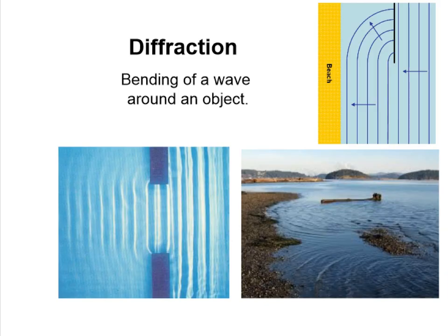When a wave strikes an object, several things can happen: the wave can be reflected, or it could be refracted if the object is transparent and the wave continues to travel through. A combination of both can happen — you can see a reflection in water but also see through the water at the same time.